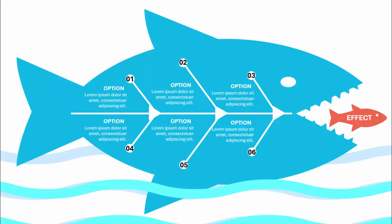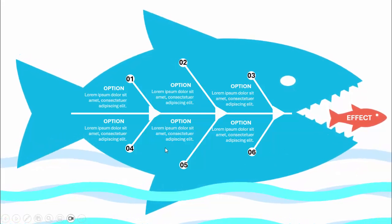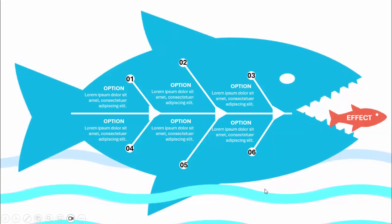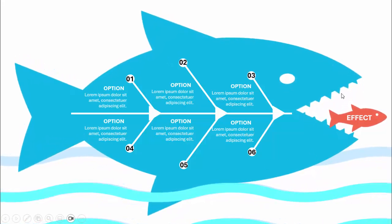In today's tutorial I'm going to show you how to create a cause and effect diagram, also called the fishbone diagram. I've added a fish with six options and the effect shown with the red fish. I've also added a water effect, and when you click it will start floating or swimming in the water — you can see the water also moves.